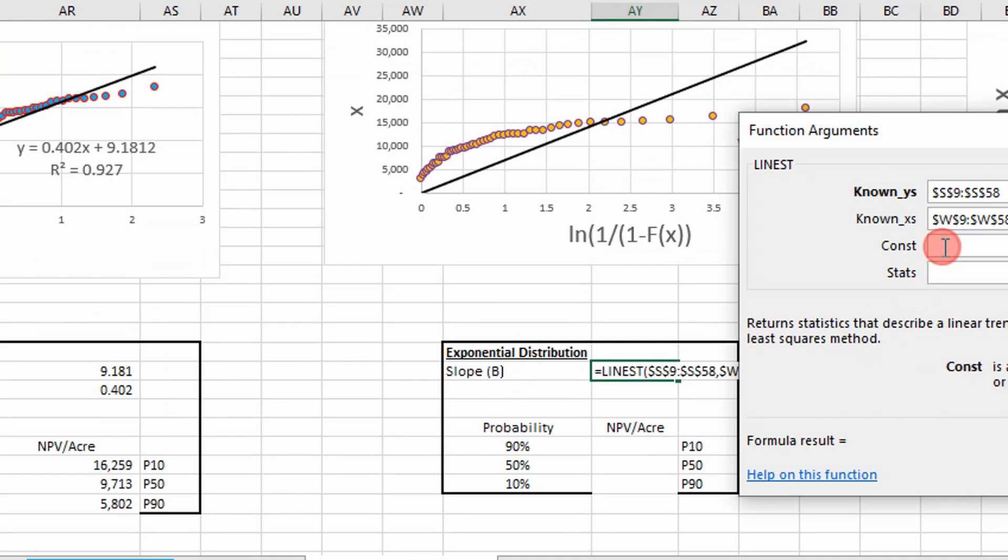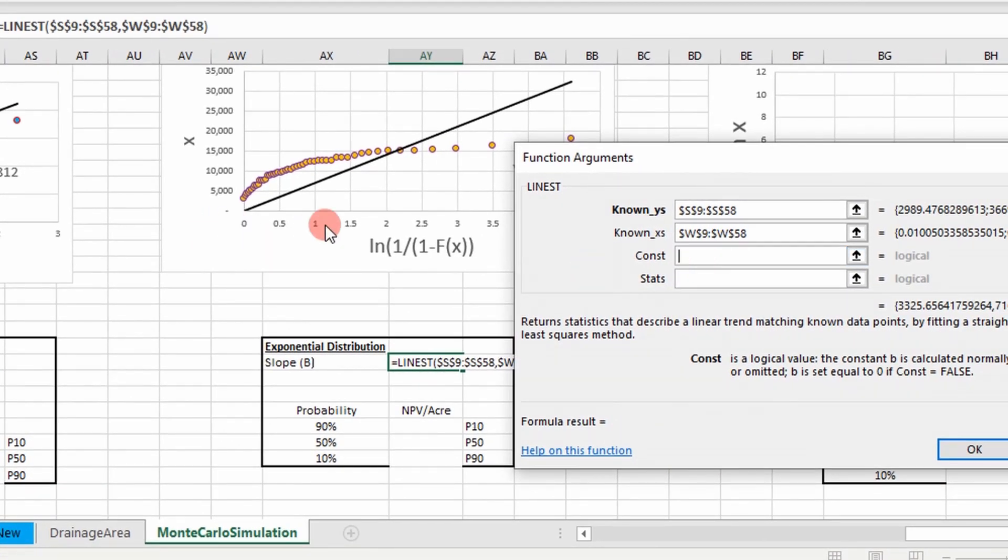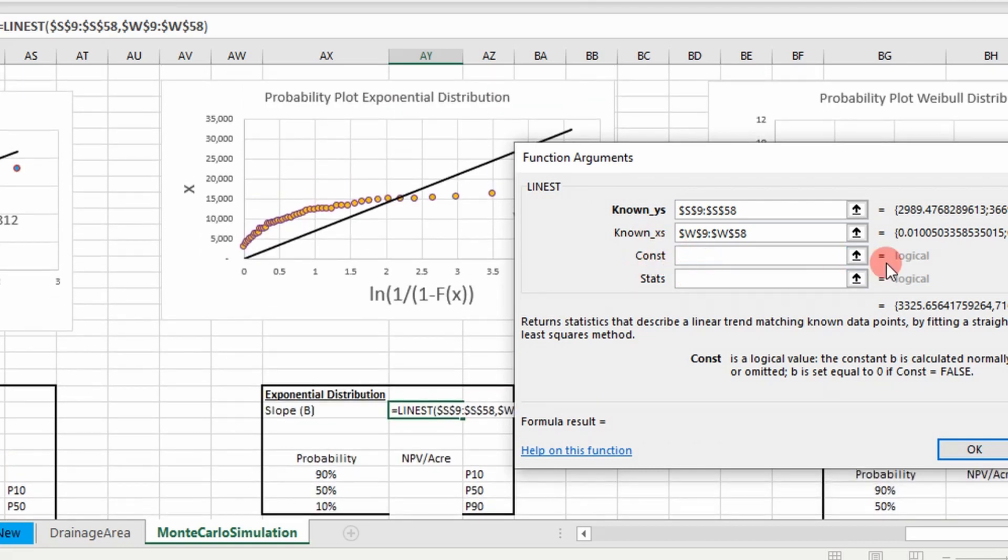It's going to ask: do you want your constant to go through zero or not? If you want to force your intercept through zero, which I'm calling our constant here, you assign it a value of false.